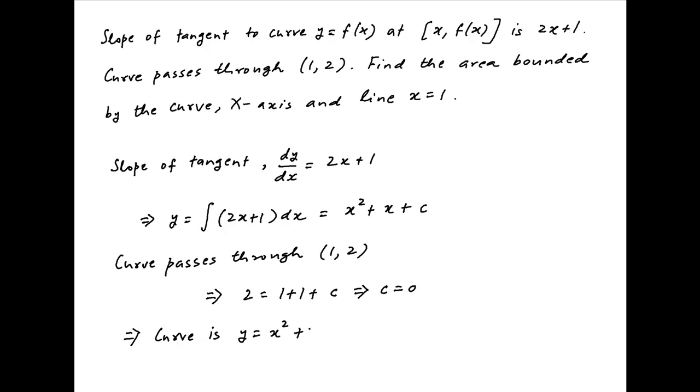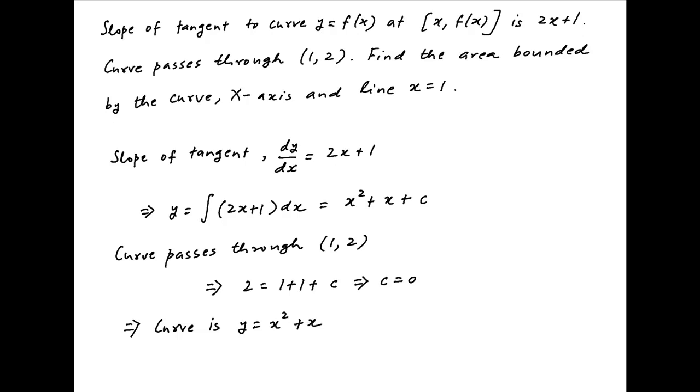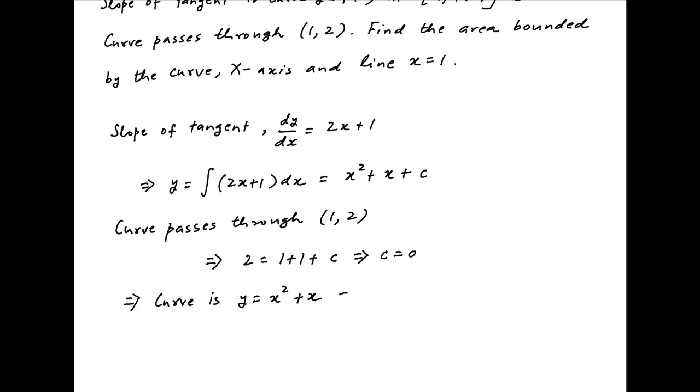Therefore the equation of the curve is y is equal to x square plus x. Adding 1/4 to both sides this can be written as y plus 1/4 is equal to x square plus x plus 1/4. The right hand side is a perfect square equal to (x plus 1/2) whole square.